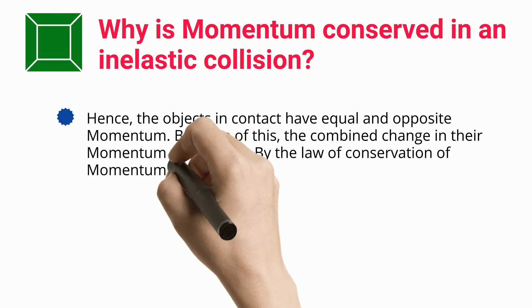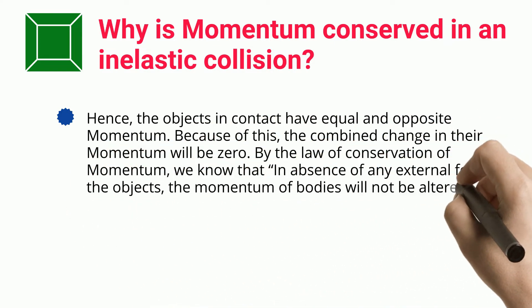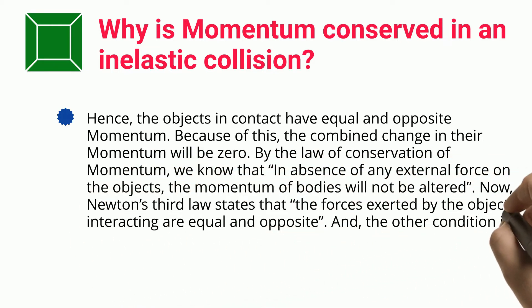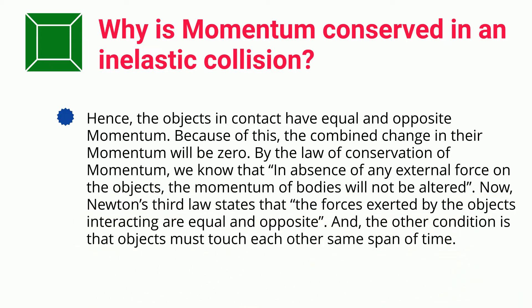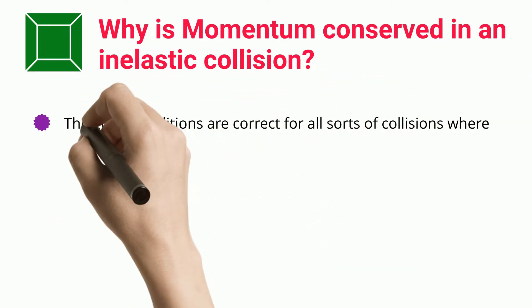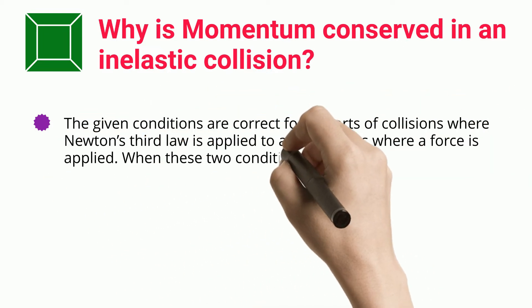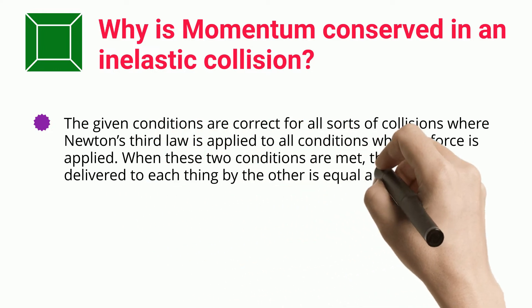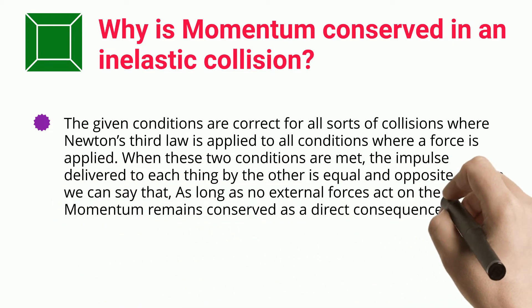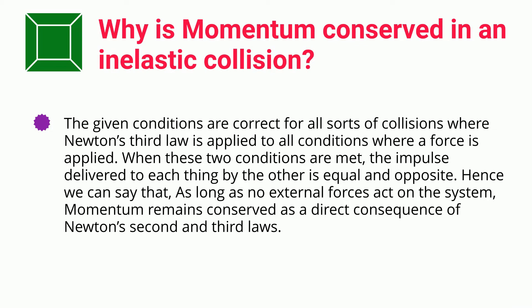Hence the objects in contact have equal and opposite momentum. Because of this, the combined change in their momentum will be zero. By the law of conservation of momentum, in the absence of any external force, the momentum of bodies will not be altered. Newton's third law states that the forces exerted by interacting objects are equal and opposite, and that the objects must interact over the same span of time. When these two conditions are met, the impulse delivered to each object by the other is equal and opposite. Hence, as long as no external forces act on the system, momentum remains conserved as a direct consequence of Newton's second and third laws.